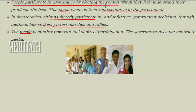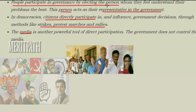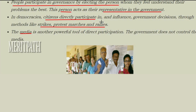People participate in governance by electing the person whom they feel will understand and solve their problems. When there is an election, there may be four or five political parties and many candidates, but people with their own choice elect only one single person whom they feel is the right person to solve their issues. This person acts as the representative of the government for that particular town, city, or village.